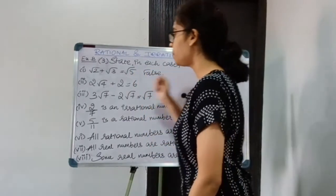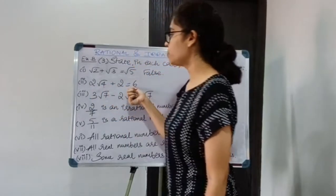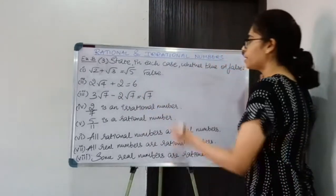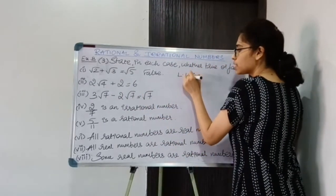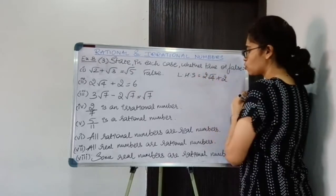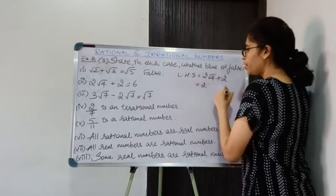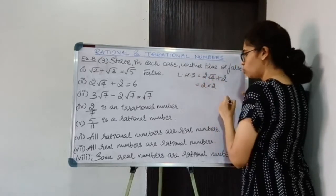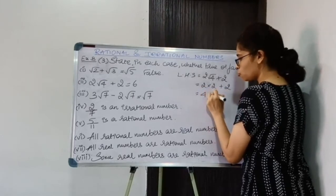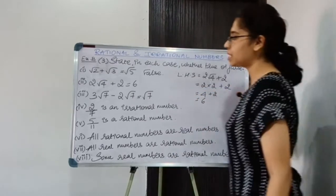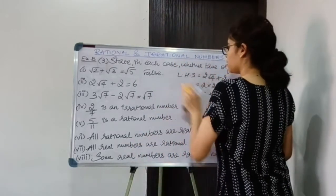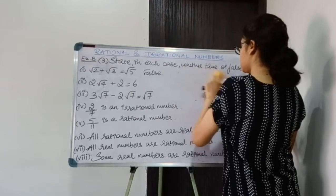Coming to the second part: 2√4 + 2 = 6. We need to verify by calculating the LHS. 2 × √4 = 2 × 2 = 4. So 4 + 2 = 6. LHS equals RHS. Therefore the given statement is true.